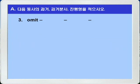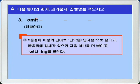3번, omit. Omit은 생략하다라는 뜻의 규칙 변화를 하는 이음절 동사인데, 단모음 플러스 단자음으로 끝나고, 강세가 두 번째 음절 즉 끝음절에 있죠. 따라서 끝자음 T를 하나 더 붙이고 ED, ING를 붙이면 됩니다. omit, omitted, omitted, omitting이 되겠습니다.